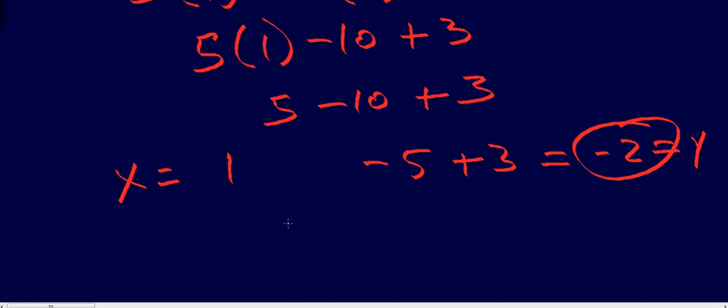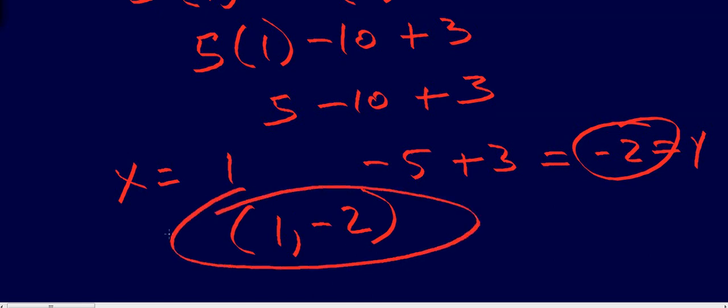So x is 1, y is negative 2. If you're in my class and you leave it this way, I'll count off some points. To get full credit, you write it as an ordered pair. And that is how you find the vertex of a parabola. Enjoy.